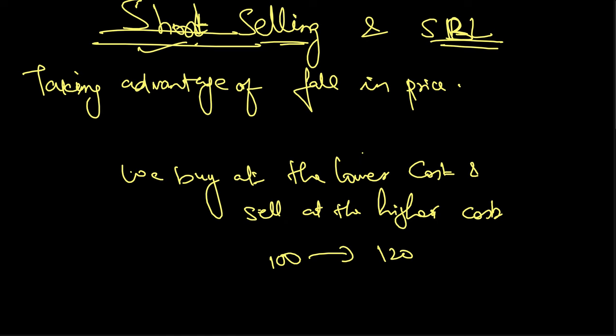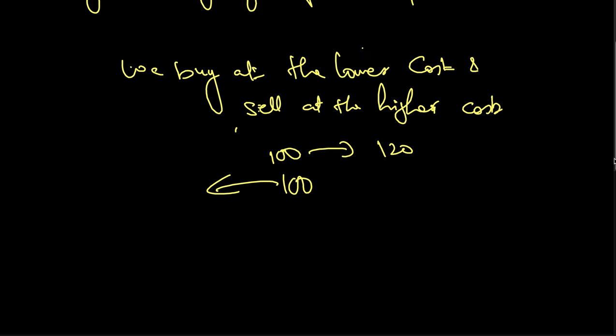From 100 it reaches 120 — that's how we all do business. But in short selling, you make money when the price comes from 100 to lower than 100. So how is that possible? Before understanding short selling in the share market, let's look at where we use this concept in our everyday life.